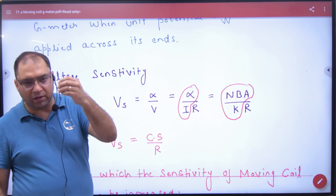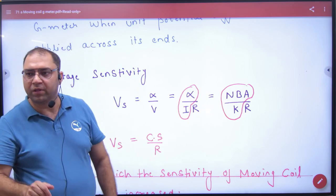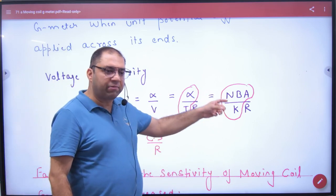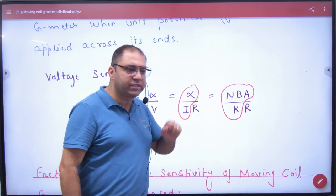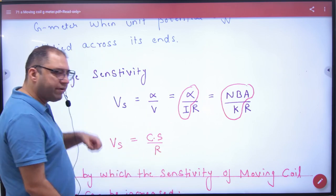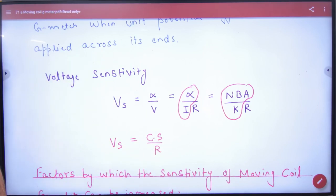When you increase N, your sensitivity increases, but the resistance increases. With which the voltage sensitivity decreases. So that means, but N cannot be increased beyond a particular limit.